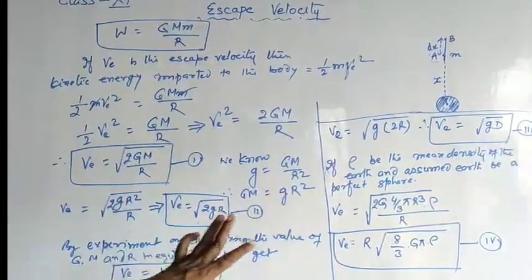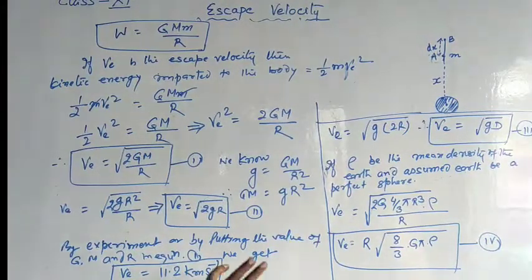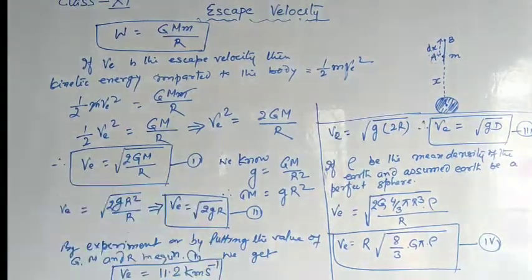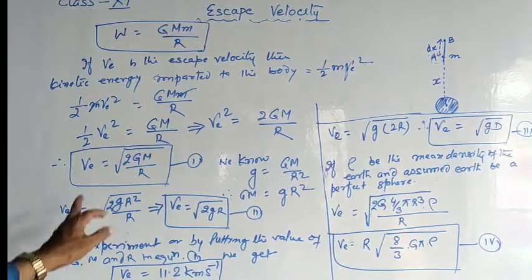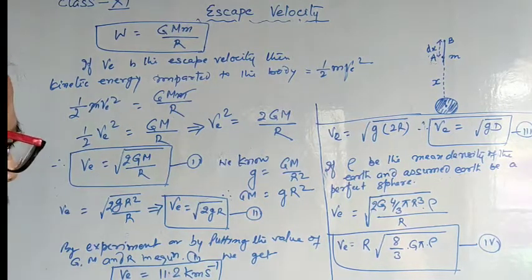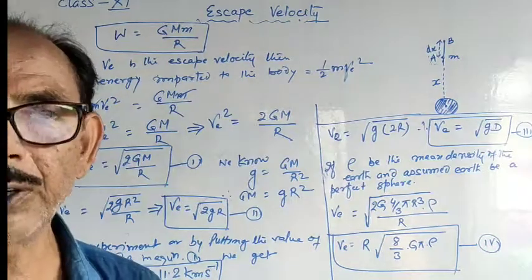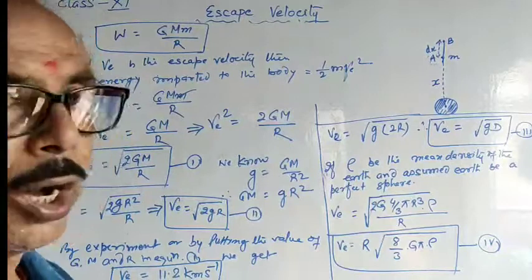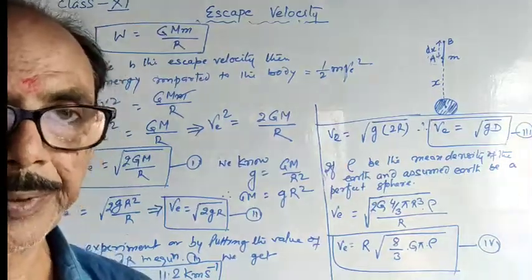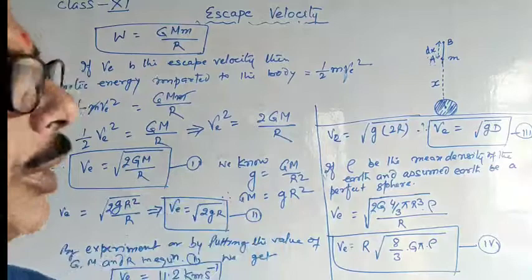We have derived four equations for the escape velocity, and by putting the values of G, M, and R we get the escape velocity from the Earth's surface as 11.2 kilometers per second. In the next session, I will talk about orbital velocity and some other topics.